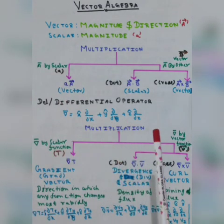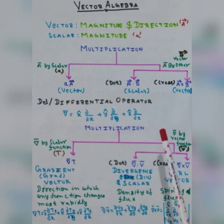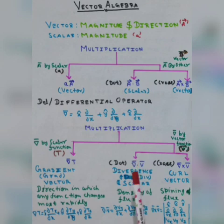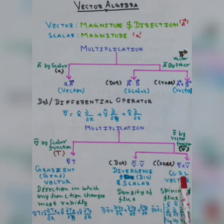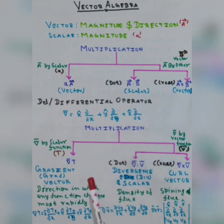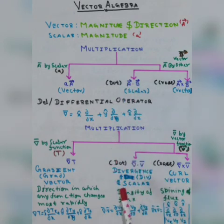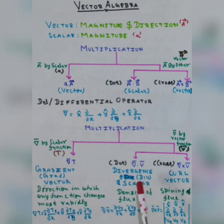There are also two types of multiplication when del is multiplied by any vector function. It is known as either a dot or a cross product. The cross product is also known as a vector quantity — it is called the curl. The other one is known as a dot product. It is also a scalar quantity, and it is known as the divergence, or in short form, div.